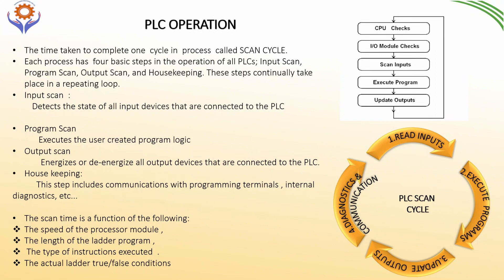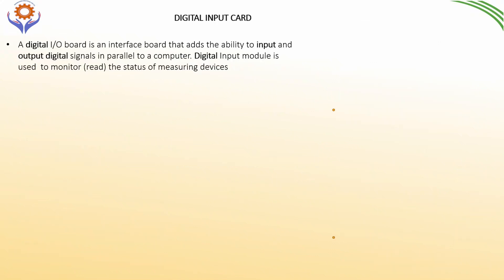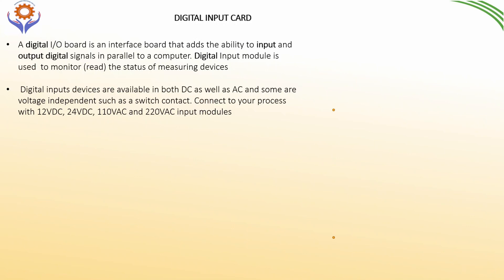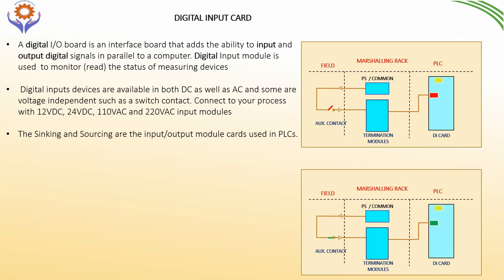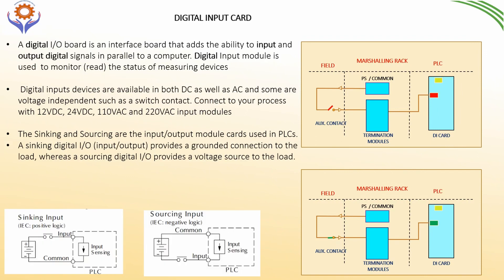What is the digital input/output board? It is an interface board that adds the ability to input and output digital signals in parallel to the PLC. The digital input module is used to monitor the status of measuring devices. Digital input devices are available in both DC and AC, and some are voltage-independent such as switch contacts. They connect to your process with 12V DC, 24V, 110V AC, and 220V AC input modules. There are two types of input modules in PLCs: source and sink input modules. In source input, common is connected with positive voltage and negative with input signals. In sink inputs, it is vice versa — common is connected with negative voltage and positive is connected with the input devices.